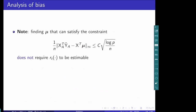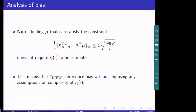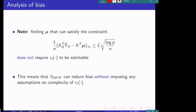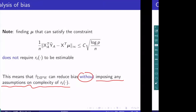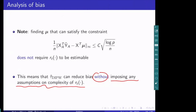Importantly, notice that in the entire generating process, finding mu that satisfies this constraint does not require the outcome regression model R_t to be estimable. This means that the DIPW estimator can reduce the bias of the original IPW estimator to be of small order 1/√N without imposing any assumptions on the complexity of the outcome regression model R_t. This is how we control the bias without estimating or making any assumptions on R_t.